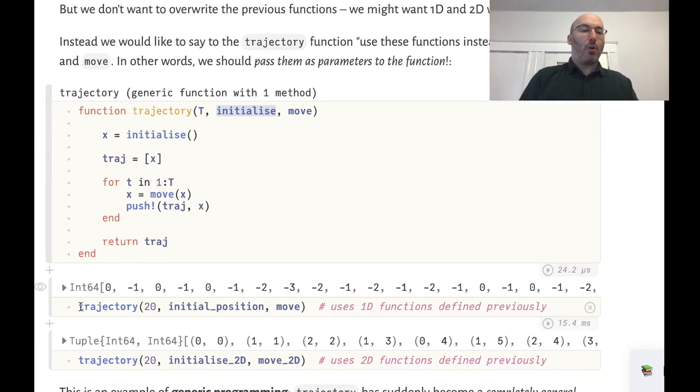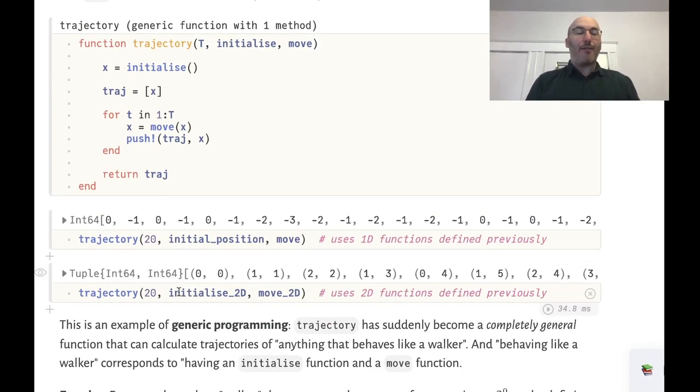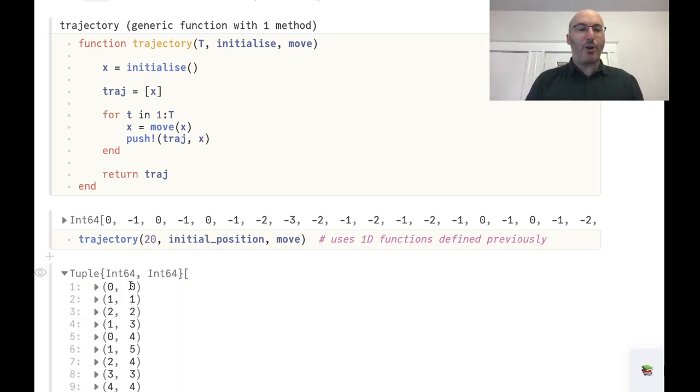So let's try that out. If I call trajectory with the functions that I defined globally before that correspond to moving the one-dimensional walker indeed I get the trajectory of a one-dimensional walker.